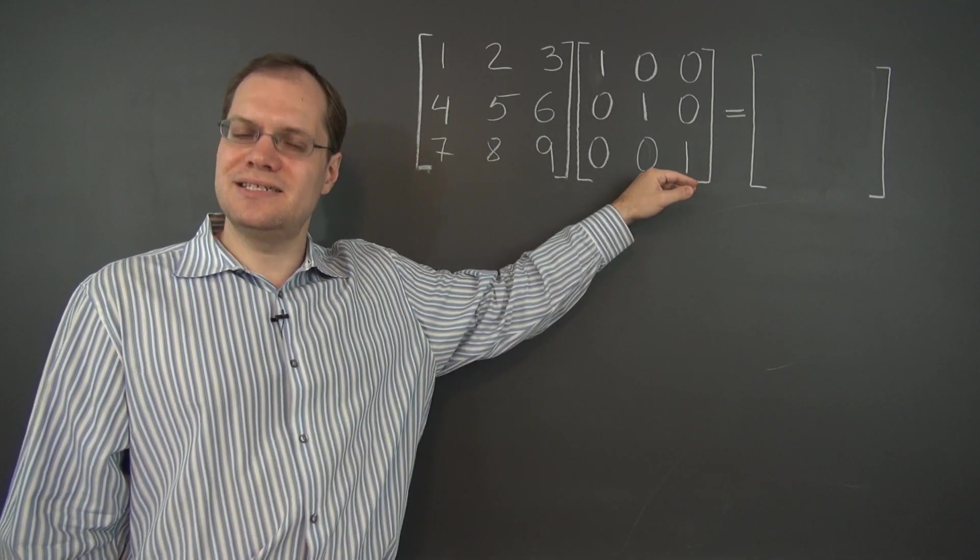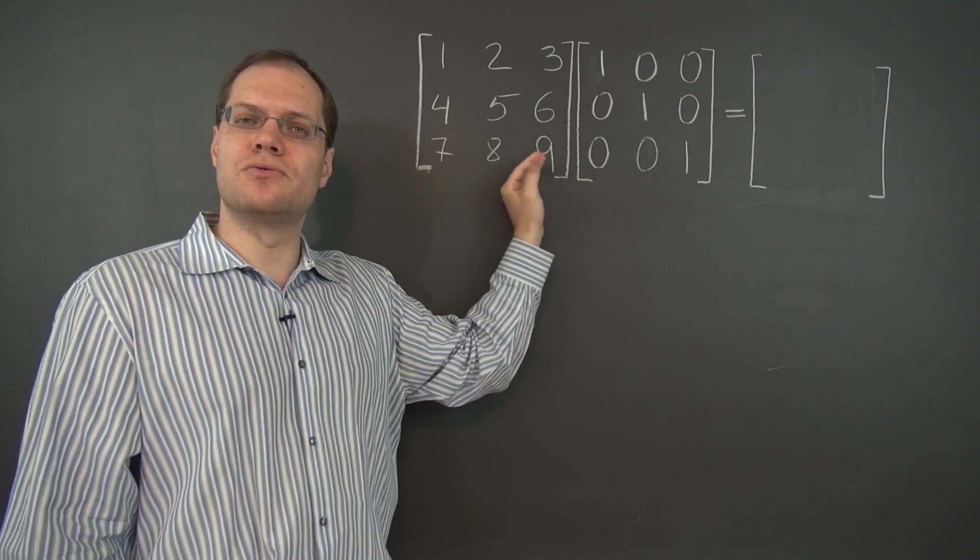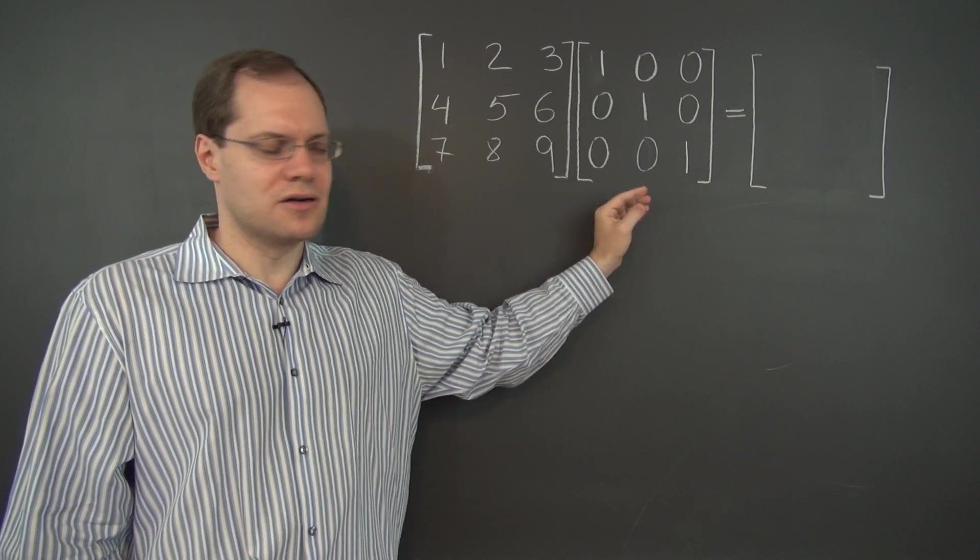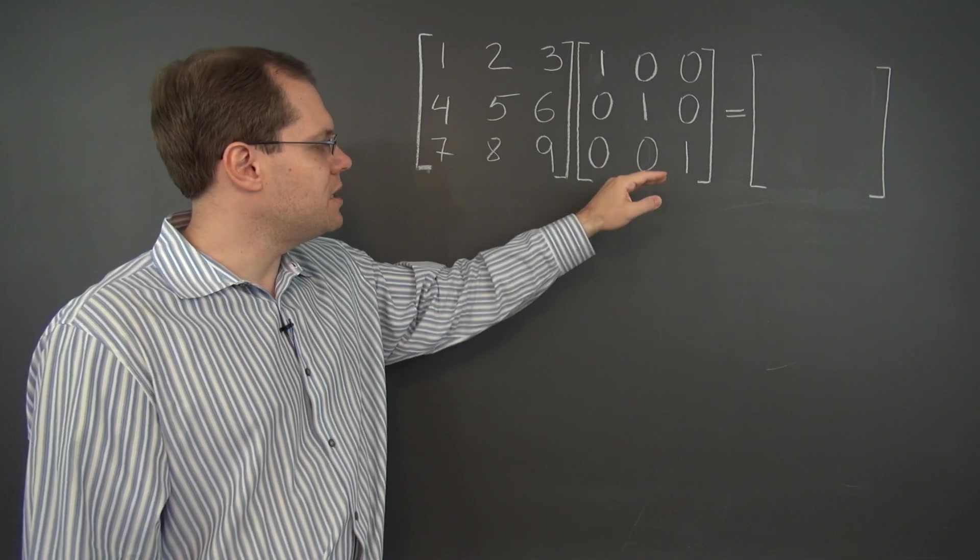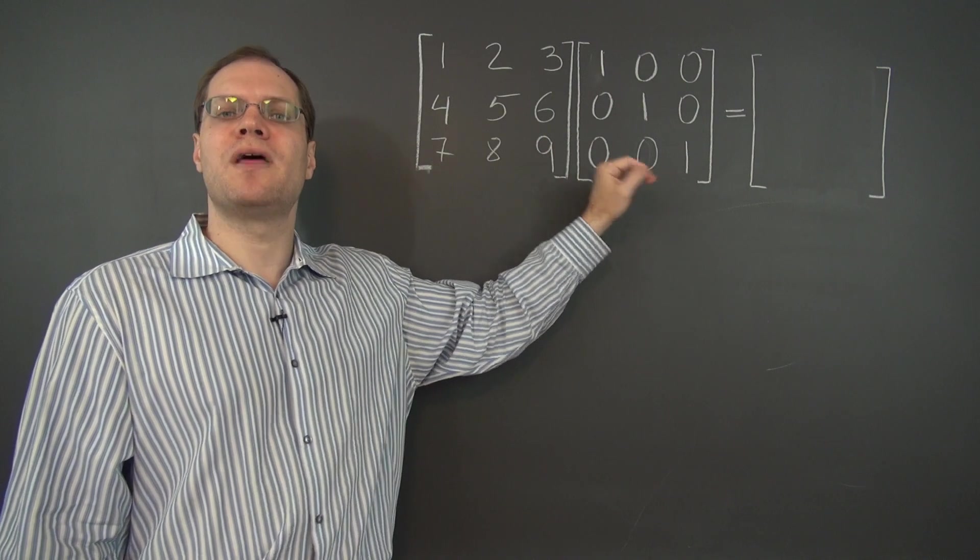This matrix, called the identity matrix, leaves any other matrix that it multiplies from the right unchanged. We have to be careful in specifying the order because the order of the multiplicative terms matters. So it's the matrix that leaves any other matrix that it multiplies from the right unchanged.